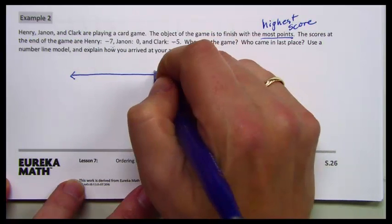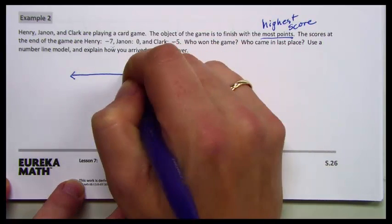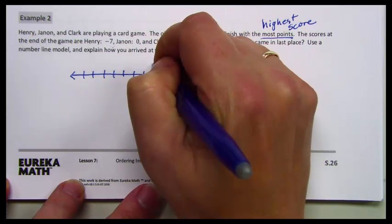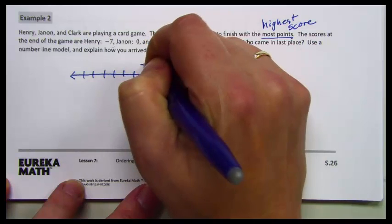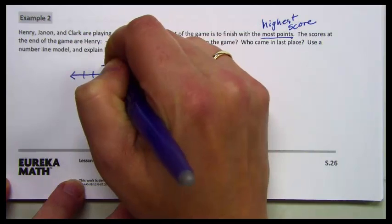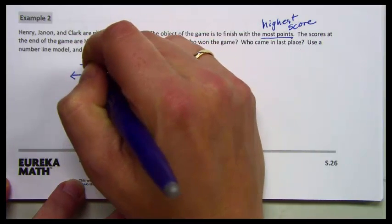And then because we have negative 7 and negative 5, I'm going to count by ones: negative 1, negative 2, negative 3, negative 4, negative 5, negative 6, negative 7, and negative 8.